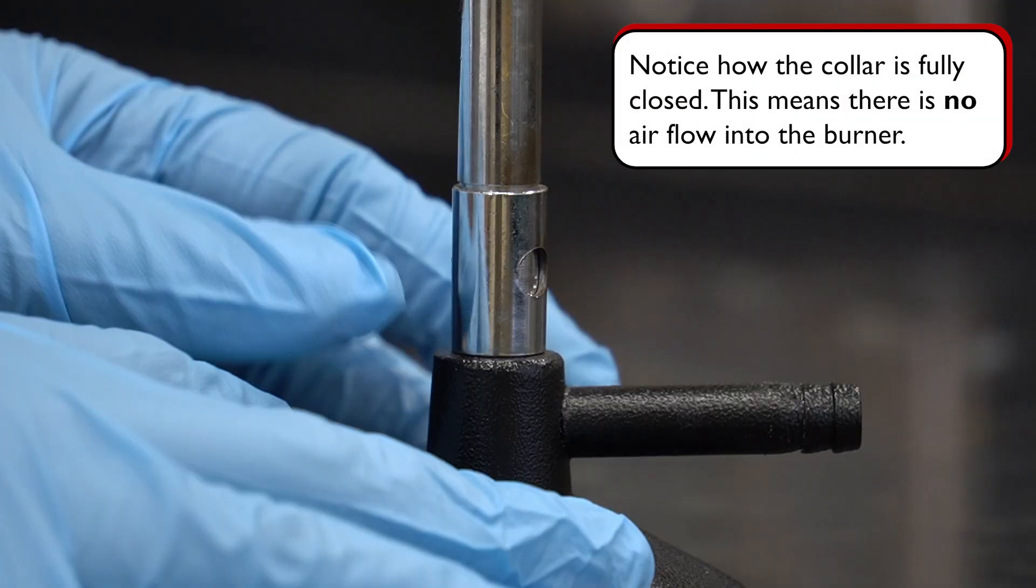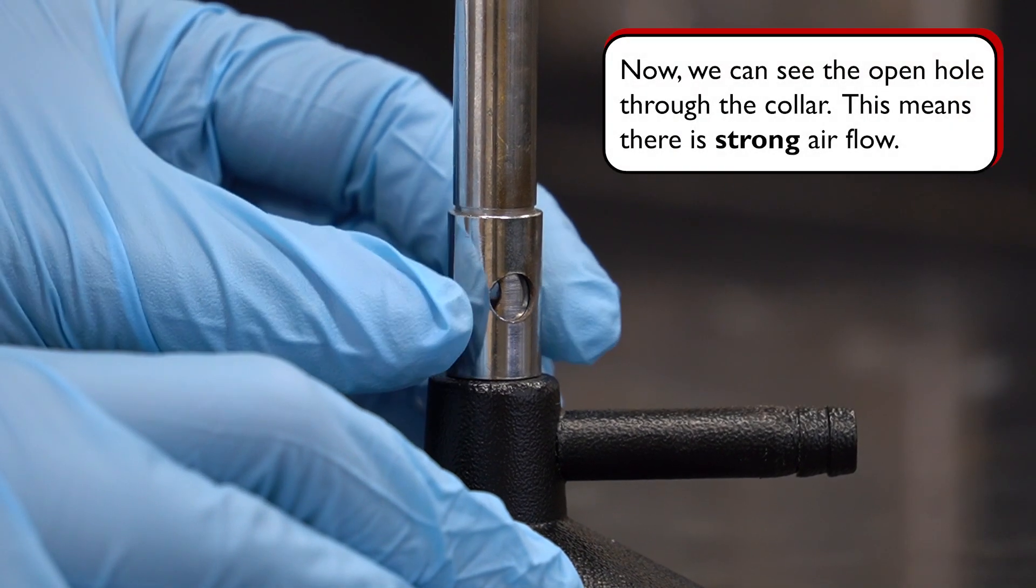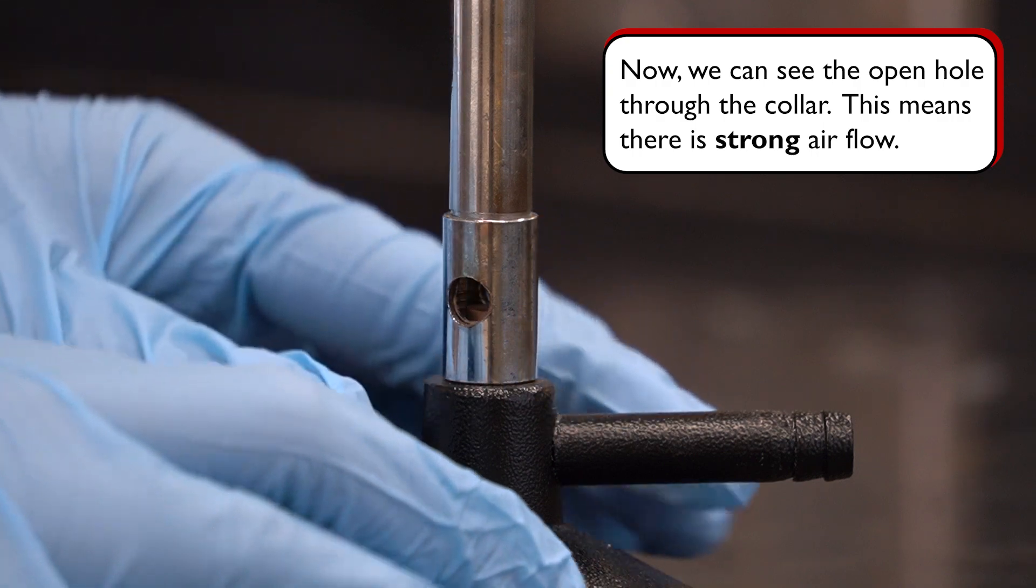The flow of the air can be adjusted by twisting the collar, which will adjust the temperature of the flame accordingly.